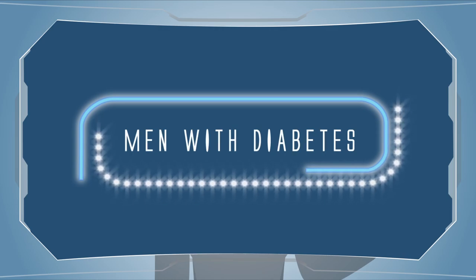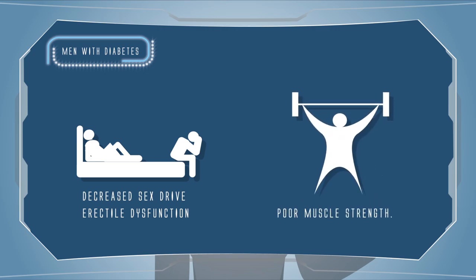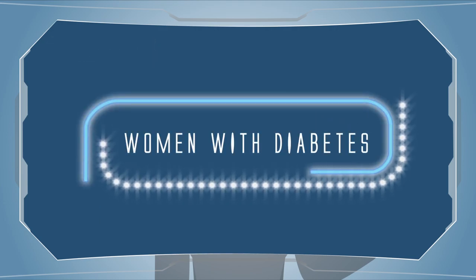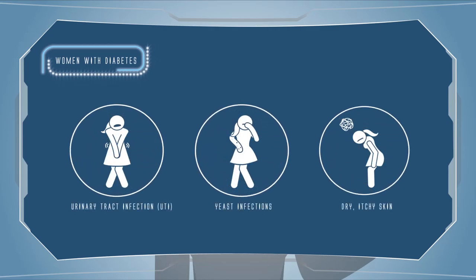Symptoms specific to men with diabetes include decreased sex drive, erectile dysfunction, and poor muscle strength. Symptoms specific to women include urinary tract infections (UTI), yeast infections, and dry or itchy skin.